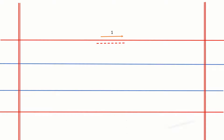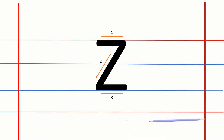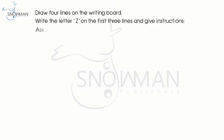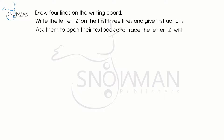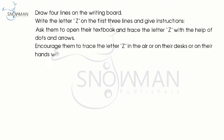Guide the formation: start from the red point, draw a straight line, slide down, then turn back and draw a straight line again. Ask the children to open their textbook and trace the letter Z with the help of dots and arrows. Encourage them to trace the letter Z in the air, on their desks, or on their hands using their index finger.